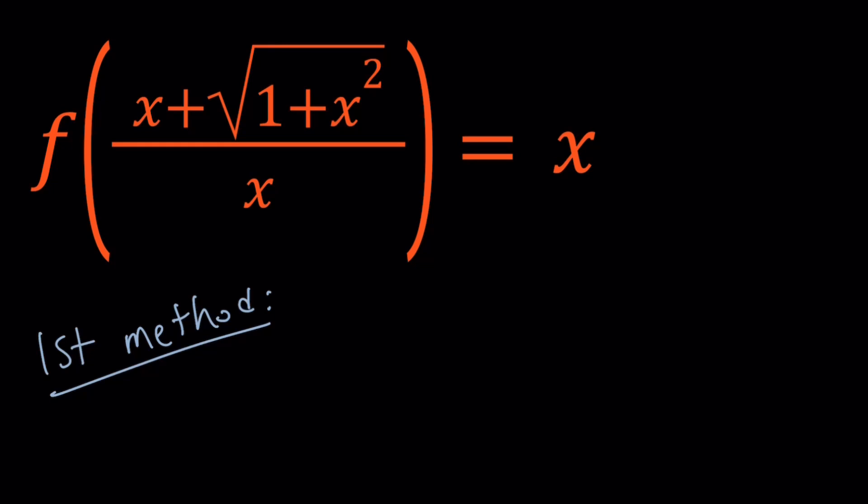I'm going to go ahead and call this expression inside the parentheses something. Because that's definitely going to simplify things, right? So let's go ahead and set it equal to t. So this gives me f of t equals x. Obviously this is an oversimplification, t and x are related, but I've got to find out how. Now, I do have t in terms of x, now I've got to find x in terms of t, so that I can write it on the right hand side.